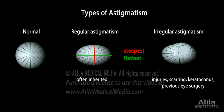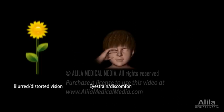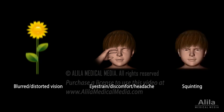Astigmatism is common in children, but because children don't usually realize they have blurry vision, a regular eye checkup is important to detect the condition. Signs to watch out for include blurred or distorted vision, eye strain or discomfort, headache, and squinting.